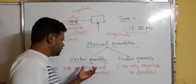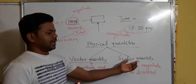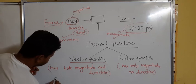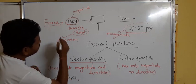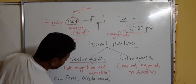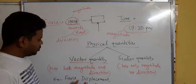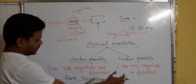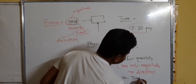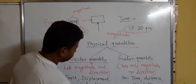So students, the difference between vector and scalar quantity is clear: physical quantities which have both magnitude and direction are called vector quantities, and those which have only magnitude with no direction are called scalar quantities. Some examples of vector quantities are force, displacement, and acceleration — we will discuss displacement and acceleration in coming sessions. Examples of scalar quantities are time, distance, speed, and so on.